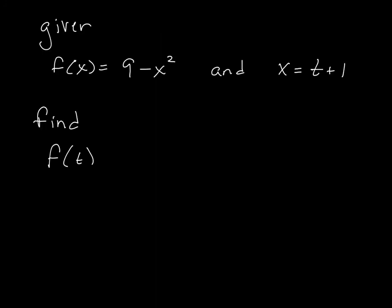Alright, again, like I said, just think about this as substitution. So this is 9 minus t plus 1 squared. So this is 9 minus t squared. Here we go.